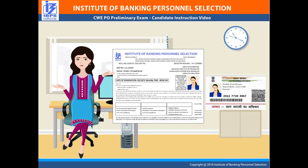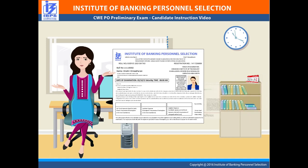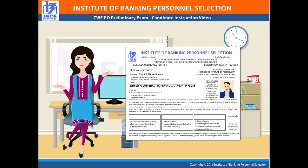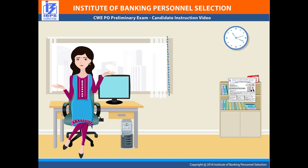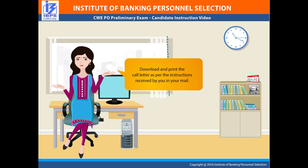Once you are clear with the date and time of the exam, the next step is to validate the name as given in the call letter and the ID proof. Note that any mismatch in the name will not be accepted and you will not be permitted to write the exam. Verify the exam centre as mentioned in your call letter. Download and print the call letter as per the instructions received by you in your mail.